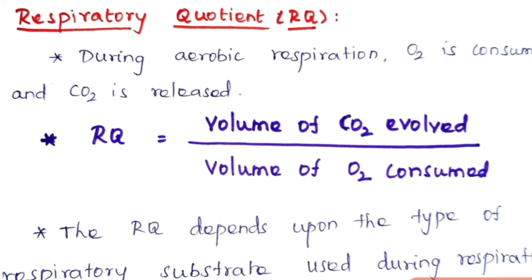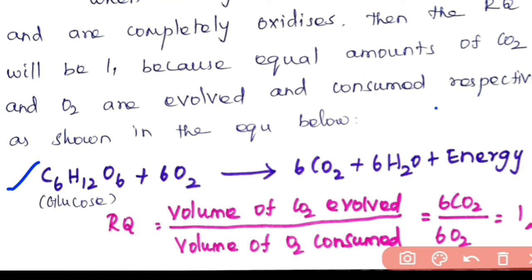First, you should write the formula to calculate the respiratory quotient: RQ equals volume of CO2 evolved divided by volume of O2 consumed. First you have to balance the reaction, or check if the given equation is balanced. If the reaction is not balanced, first balance the reaction, then see how much CO2 is released and how much O2 is consumed.